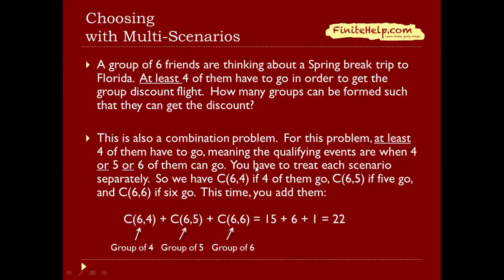We treat each scenario separately: C(6,4) if four of them go, C(6,5) if five go, and C(6,6) if six go. This time we add them together. A group of four is C(6,4), a group of five is C(6,5), a group of six is C(6,6). Adding them all gives us 22.